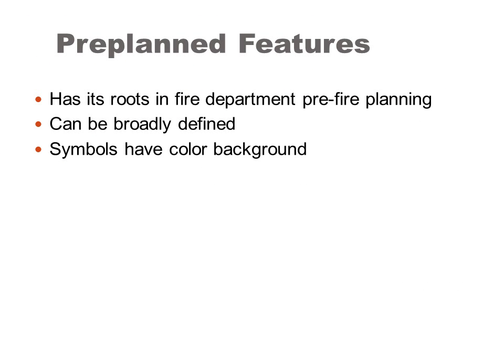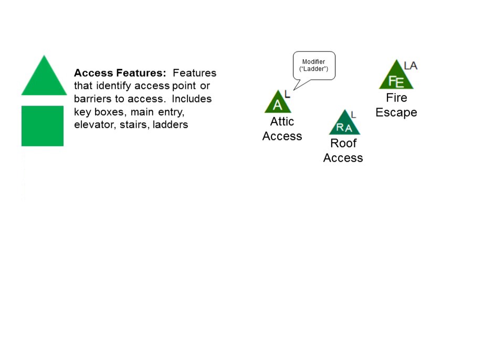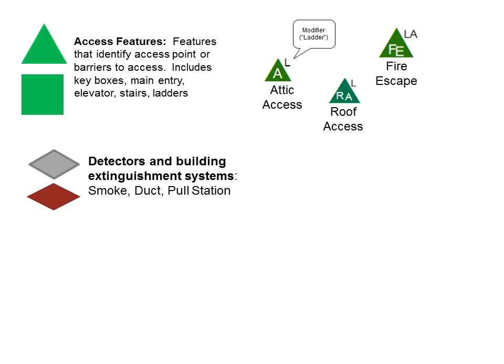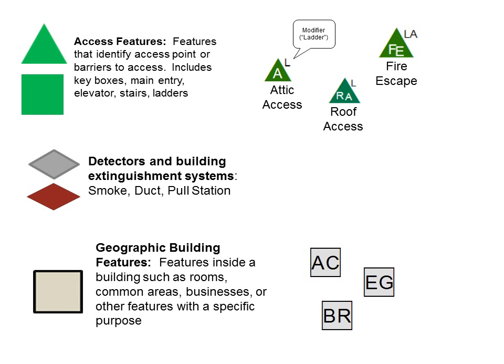Pre-planned features are features that are assessed before the incident. They are largely drawn from the fire service and derived from NFPA 1620. These standards have a color background to differentiate them from symbols that occur at the incident. Pre-planned symbol categories include access features — noting entry or exit into a part of a structure or area — detectors or fire suppression systems, and geographic building features that are part of an area or building, inside or outside, with a specific purpose.